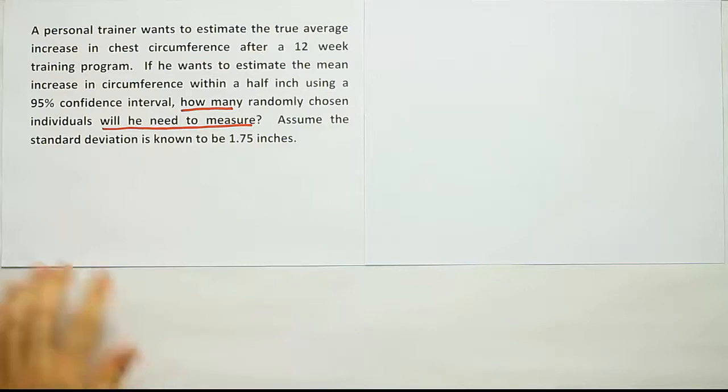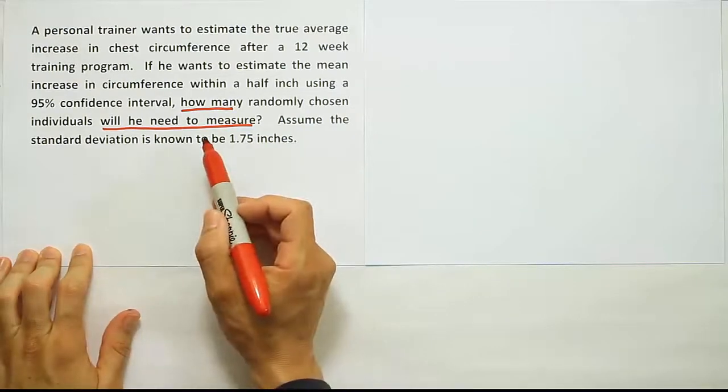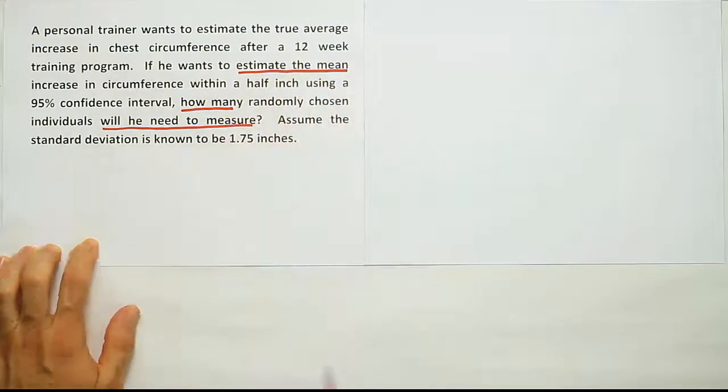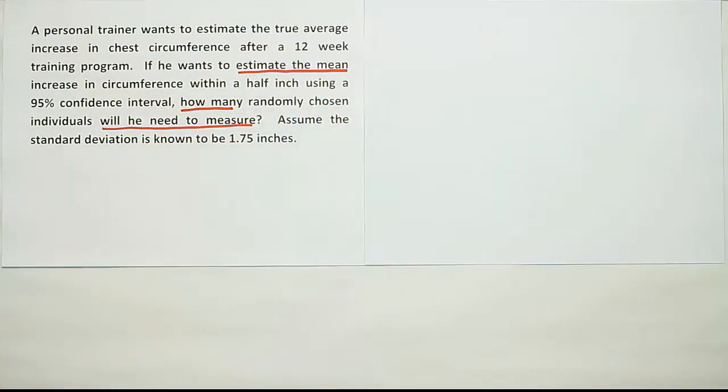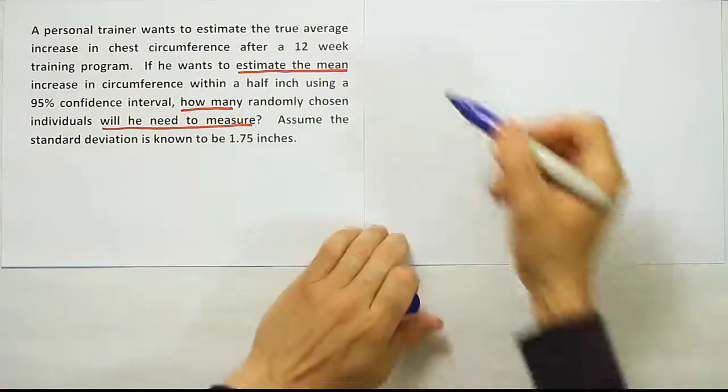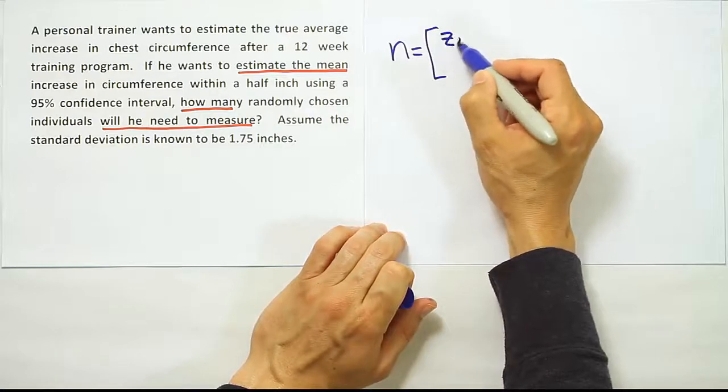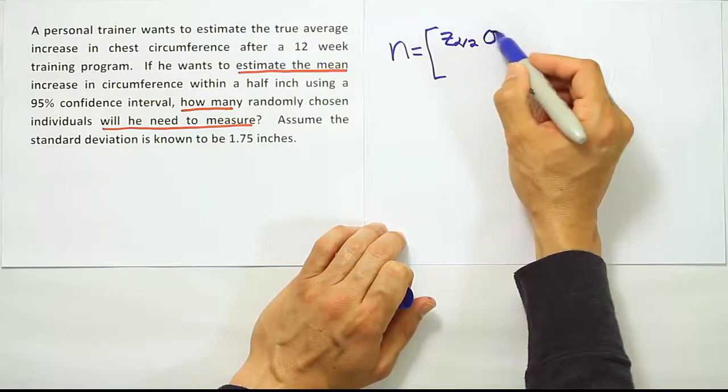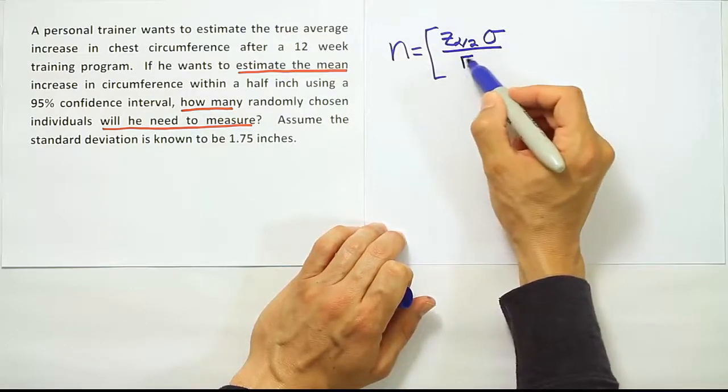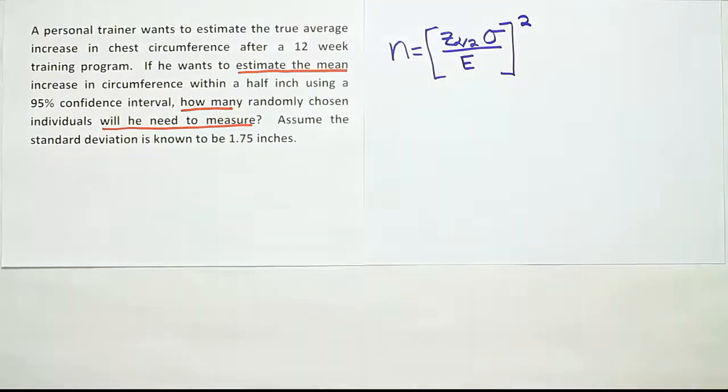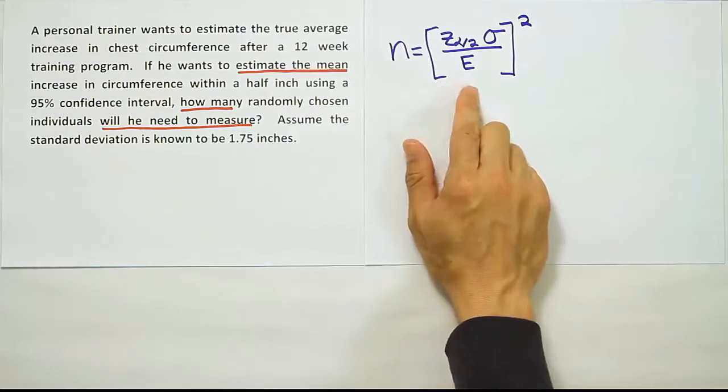We're looking for a sample size to estimate the mean. So we should be using the formula n equals z alpha divided by 2 times the population standard deviation divided by E, and then we square all of that. That's the sample size when you're looking to estimate the mean.